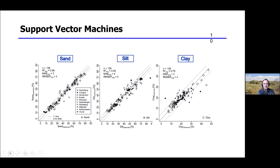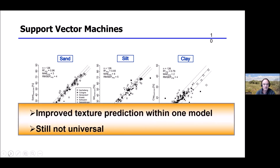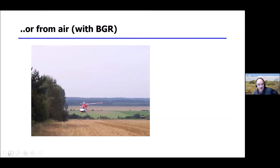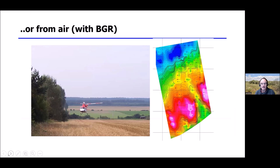Machine learning techniques can help. You can group spectroscopic measurements by other properties using support vector machines, which then select specific regression functions for specific areas. This gives quite good predictions across different areas, making calibration less strictly site-specific — though still not universal. We are also trying to improve this with mixed technologies like X-ray fluorescence for total element content scanning. You can also fly over an area with gamma radiation devices mounted on aircraft to cover large areas by sensing.